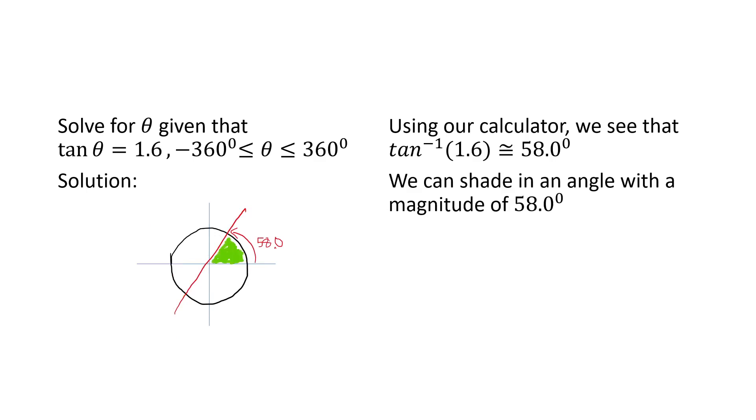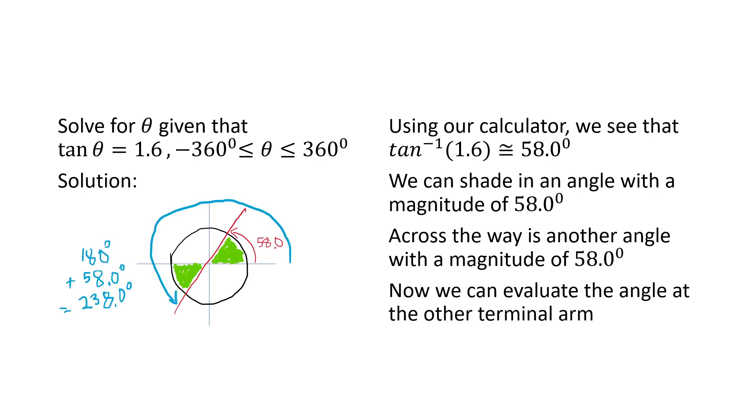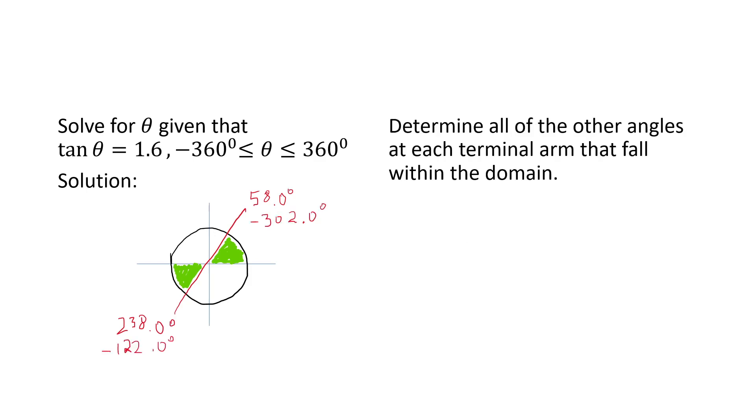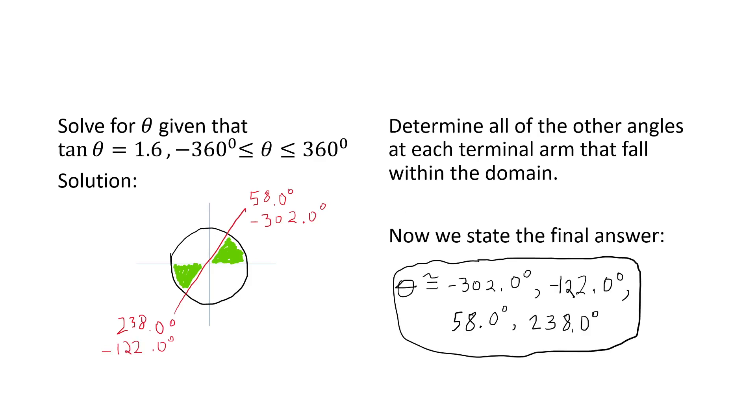So that's what we're showing here. We've got the 58.0 in green. We have another 58.0 across the way. We can evaluate the angle at the other terminal arm as we just showed. Now, what we've got is a couple of answers, one at each terminal arm, and all we have to do now, as before, is add and subtract 360 degrees at each of those terminal arm values to get all the answers in the domain given. We have one more answer at each terminal arm, and now we're able to state the final answer. Each of these theta values lies in this domain and satisfies this equation.